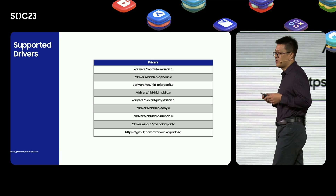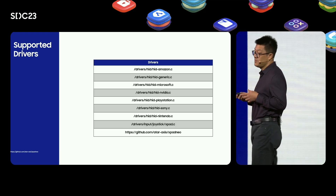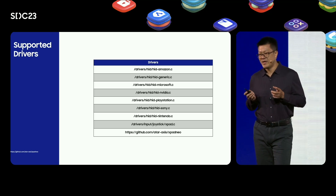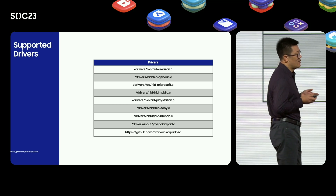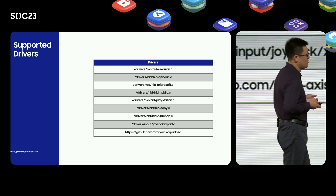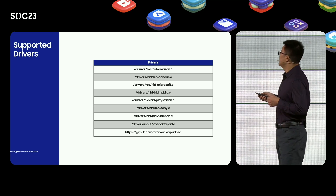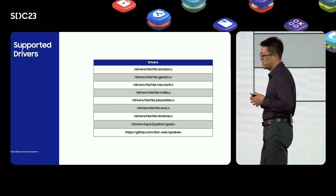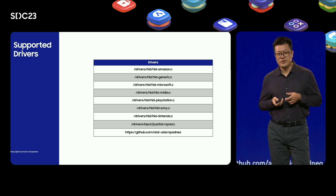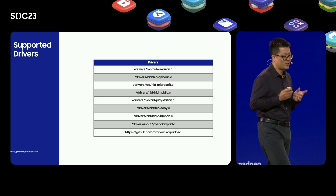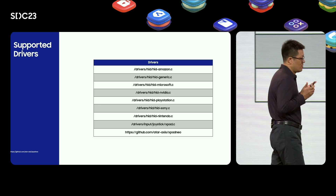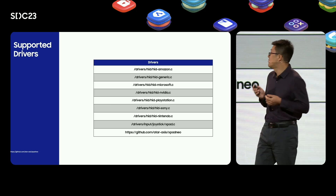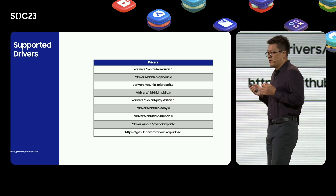This table lists specific drivers we have supported, including HID Amazon, HID Generic, HID Microsoft, HID Nvidia, HID Sony, HID PlayStation, HID Xpad, and Xpad Nero. Those drivers will be updated at any time to support new gamepad features. Xpad Nero is a driver we ported, used to support the BT connection of Xbox Series X and Xbox Elite wireless controller, including rumble support. HID Amazon is developed by ourselves to support the BT connection of Amazon's Luna wireless controller, including rumble support as well. Other driver files are ported from open source and work well on Tizen TV.